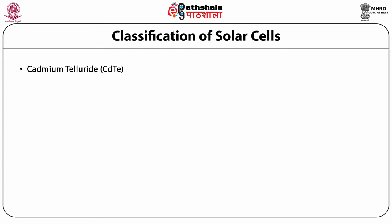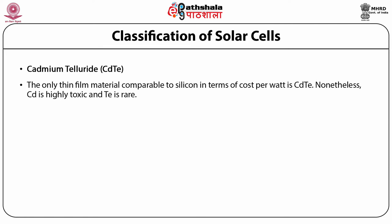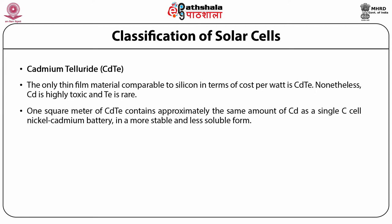Cadmium telluride (CdTe) is the only thin film material which is comparable to silicon in terms of cost per watt. Nonetheless, cadmium is highly toxic and tellurium is rare. One square meter of cadmium telluride contains approximately the same amount of cadmium as a single C-cell nickel-cadmium battery, but in a more stable and less soluble form.